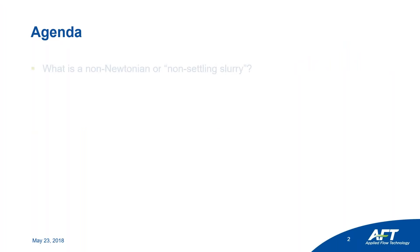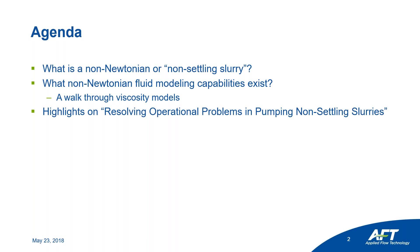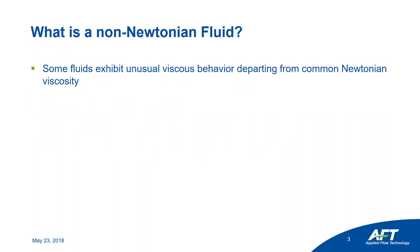Here's what we're going to talk about today: what is a non-Newtonian fluid or non-settling slurry, what types of non-Newtonian fluid modeling capabilities exist, a walkthrough of the viscosity models available in AFT Fathom, and some highlights from the technical paper on our website called "Resolving Operational Problems in Pumping Non-Settling Slurries" — the DuPont case. We'll also cover what methods are available for dealing with minor losses accurately and how big an impact minor loss corrections will have.